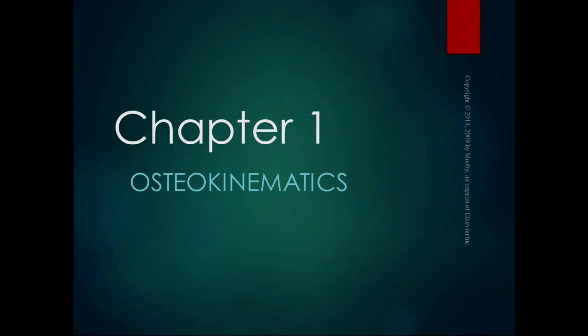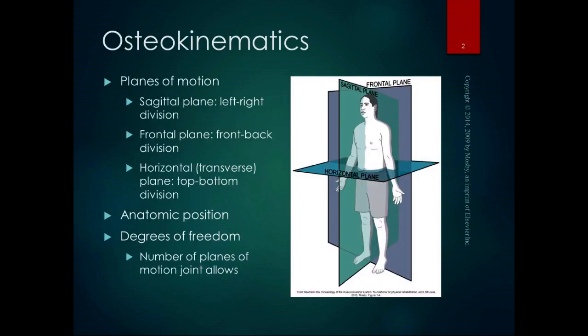In the first section we defined some basic terminology, and now we're going to talk about osteokinematics. Kinematics is the branch of biomechanics that describes the motion of a body without regard to forces that produce the motion. When we add the prefix 'osteo' — meaning bones — it becomes the movement of bones in the body without regard to the forces that move them.